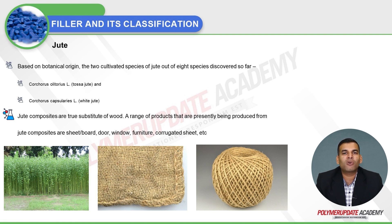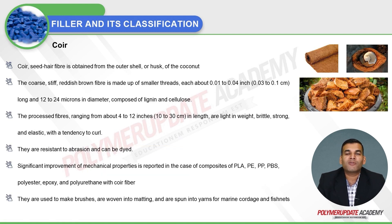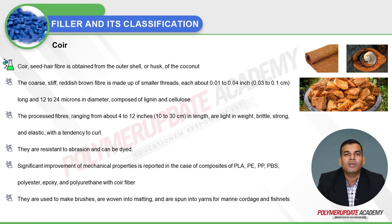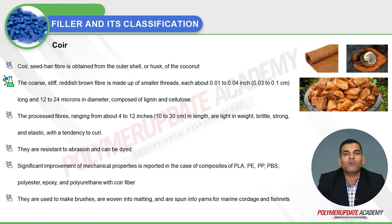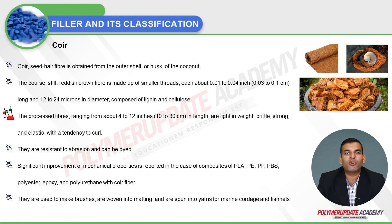Coir is a seed hair fiber obtained from the outer shell or husk of the coconut. The coarse, stiff, reddish-brown fiber is made up of smaller threads, each about 0.01 to 0.04 inches (0.03 to 0.1 cm) long and around 12 to 24 microns in diameter, composed of lignin and cellulose.